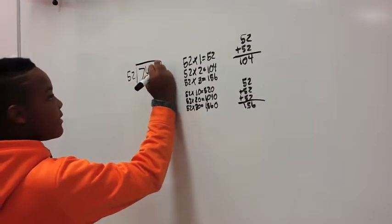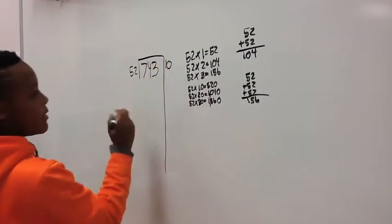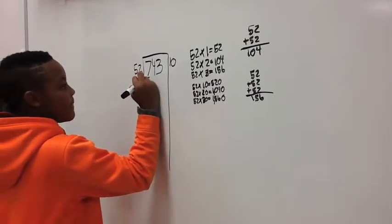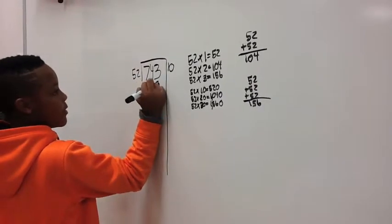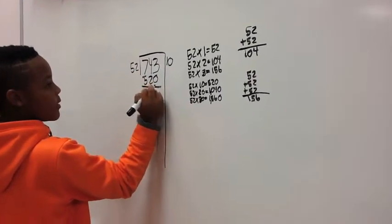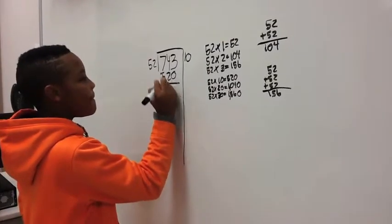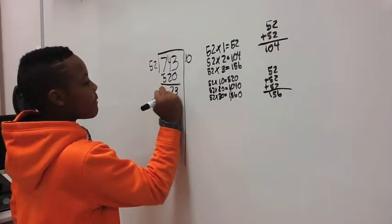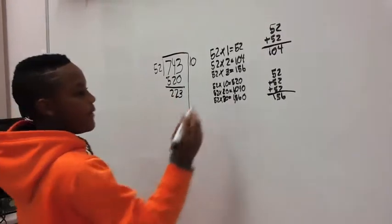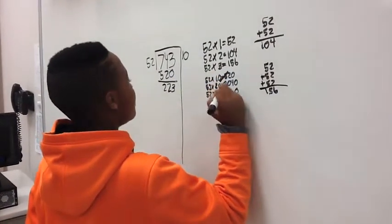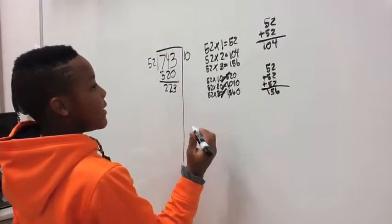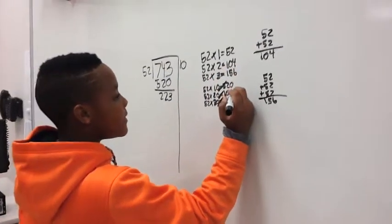So I'd write 10 on the side and subtract. So now you're saying 10 times 52 is 520 and now you're going to subtract it? Yeah. Now I can't use these anymore so I can cross them off. Because those are too big.